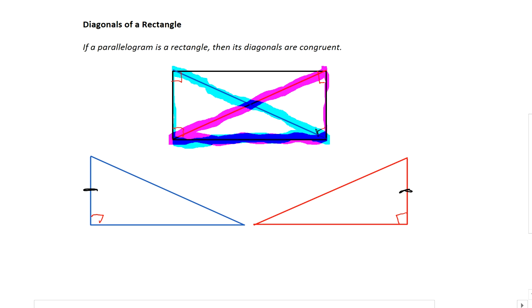Now we have so far one side and one angle that are congruent. And if you look at the bottom segment here, well that segment is equal to itself. And that's a reflexive property. So this segment is equal to itself.